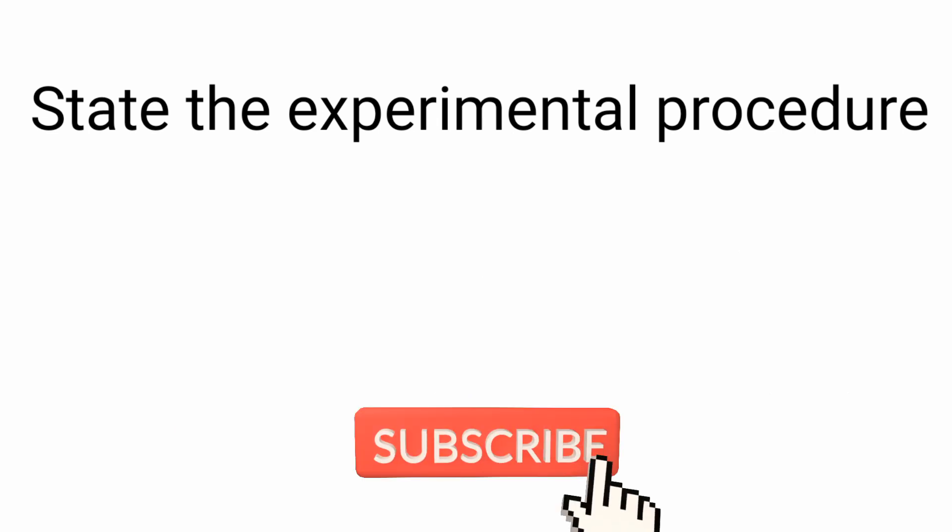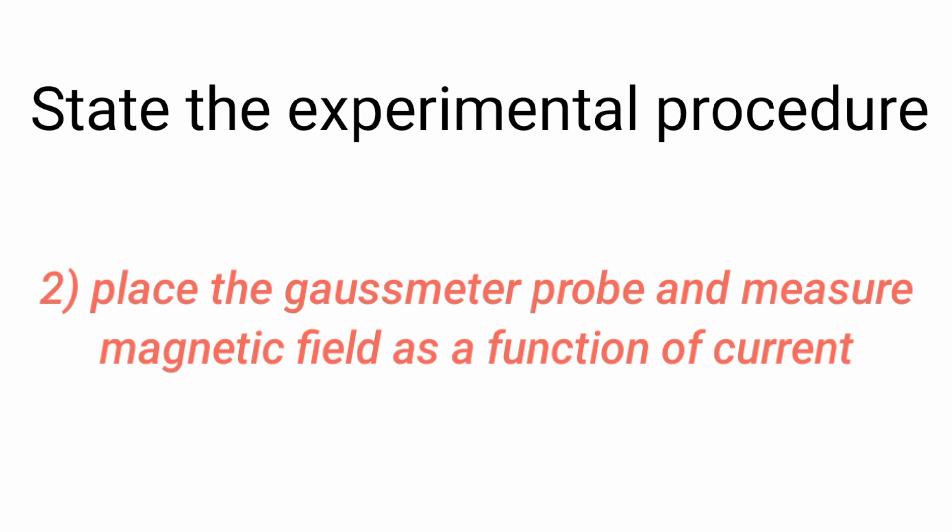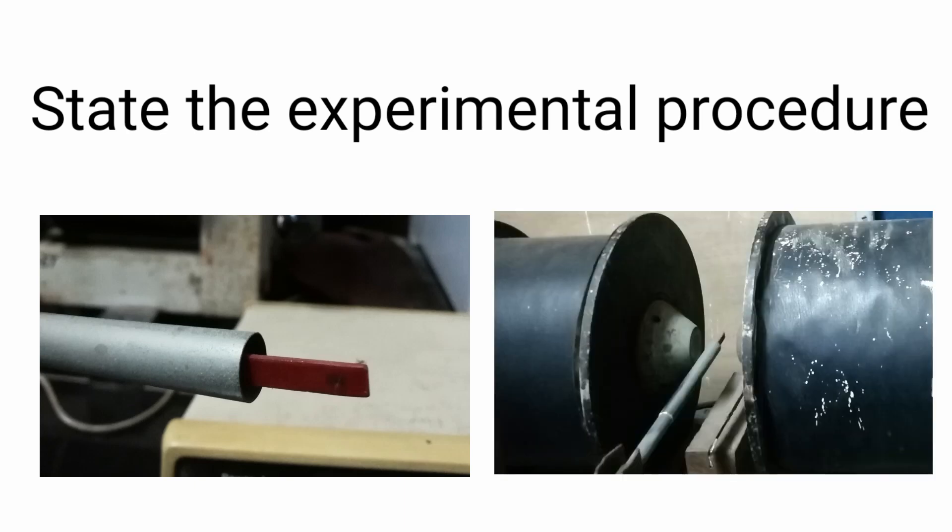The steps you need to follow: keep the distance between magnetic pole pieces at about 2 cm. Next, place the gauss meter probe and measure the magnetic field as a function of current. That is, change the value of current and note down the corresponding value of magnetic field.